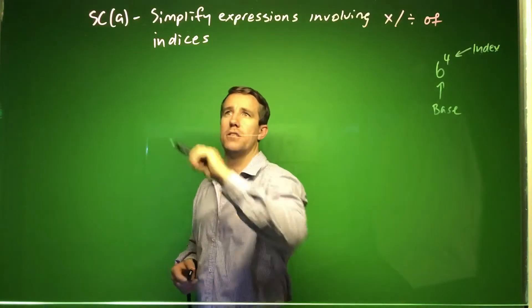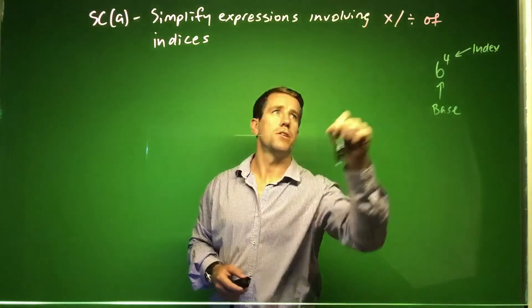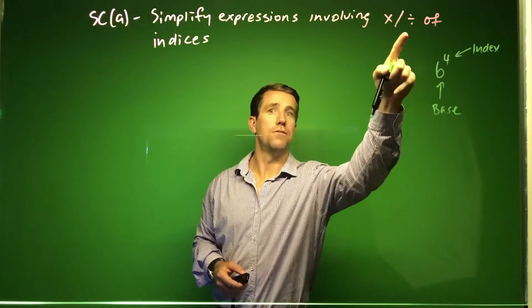Alrighty, part 2 of success criteria A, still looking at simplifying expressions, but we're going to focus on the division of indices now.